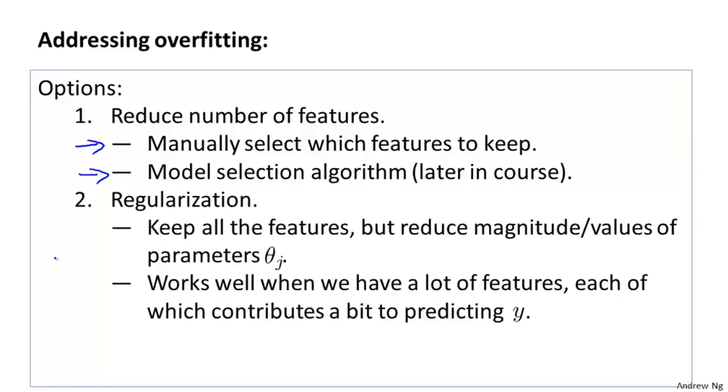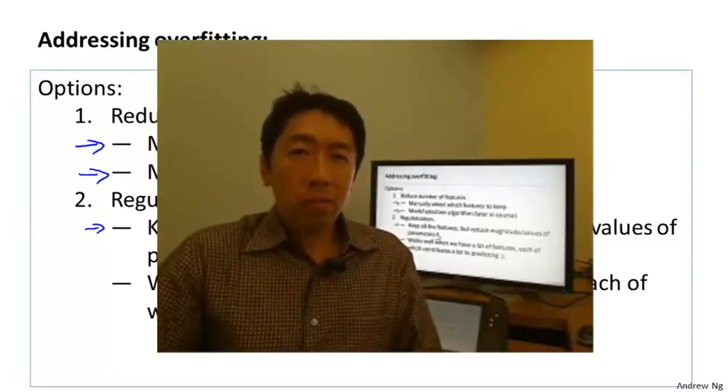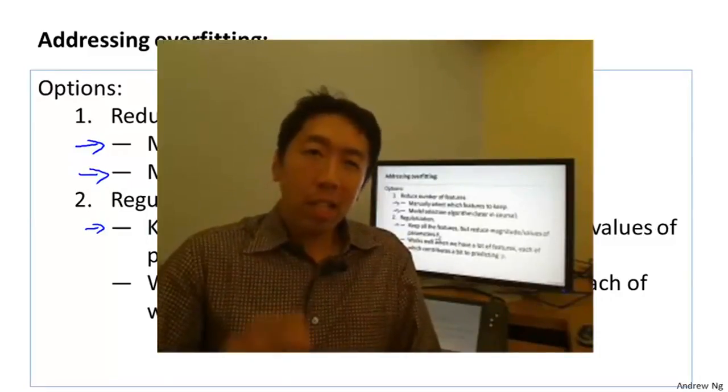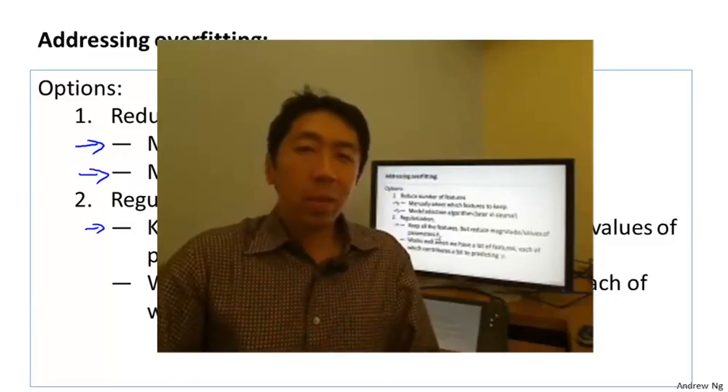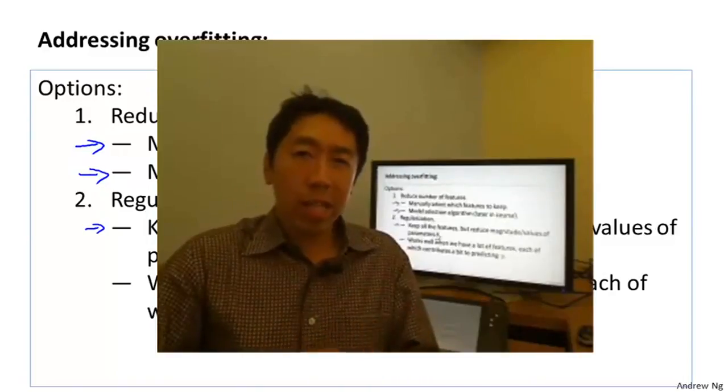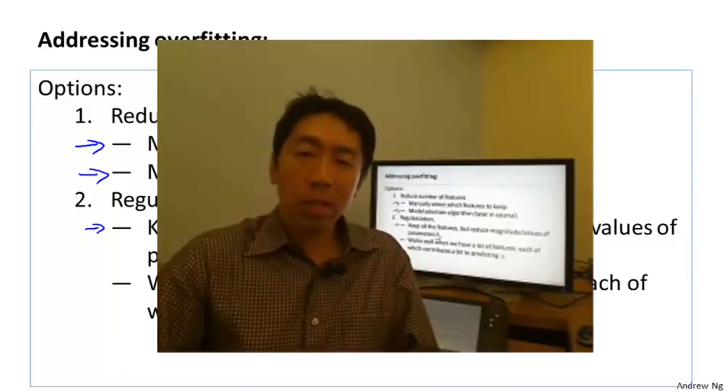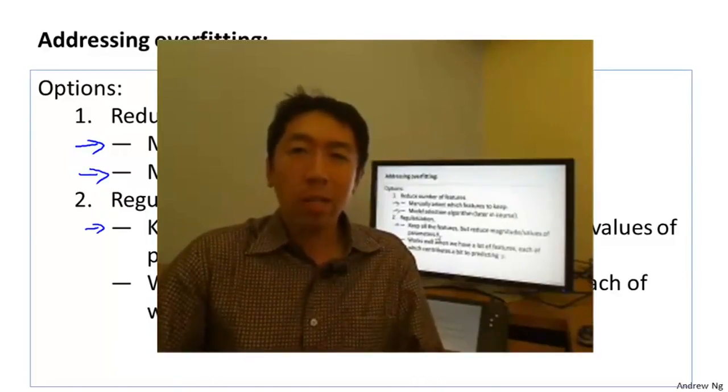The second option, which we'll talk about in the next few videos, is regularization. Here, we're going to keep all the features, but we're going to reduce the magnitude or the values of the parameters theta j. And this method works well, we'll see, when we have a lot of features, each of which contributes a little bit to predicting the value of y, like we saw in the housing price prediction example, where we could have a lot of features, each of which are somewhat useful, so maybe we don't want to throw them away. So, this describes the idea of regularization at a very high level, and I realize that all of these details probably don't make sense to you yet. But in the next video, we'll start to formulate exactly how to apply regularization, and exactly what regularization means, and then we'll start to figure out how to use this to make our learning algorithms work well and avoid overfitting.